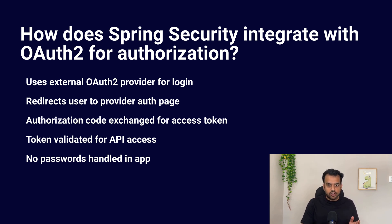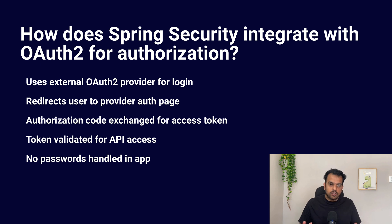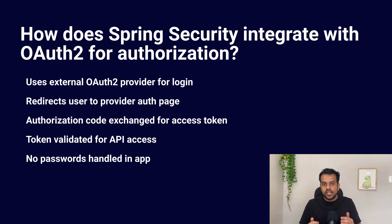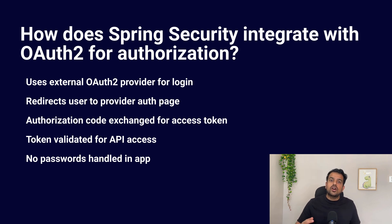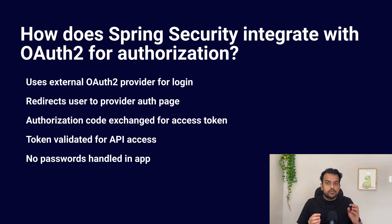If not authenticated, Spring Security redirects the user to the OAuth2 provider — for example, Google, GitHub, or your company's own authorization server. The user logs in on the provider's page. After successfully logging in, the provider sends an authorization code or token back to our application. Spring Security then uses the code to request an access token from the provider. Once the access token is received, Spring Security uses this token to understand who the user is and what permissions or scopes they have. For every request to a protected endpoint, Spring Security reads the token, validates it, and decides whether the user can access that API or not.